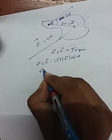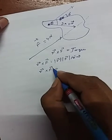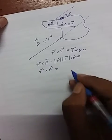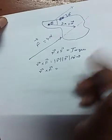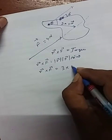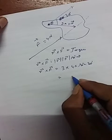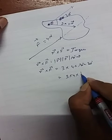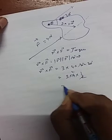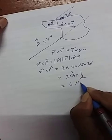Therefore, my r cross f, the magnitude, is r equals 3, f equals 4, and sine 30 degrees. That is 3 times 4 times 1/2, which equals 6, and the unit is newton meter.